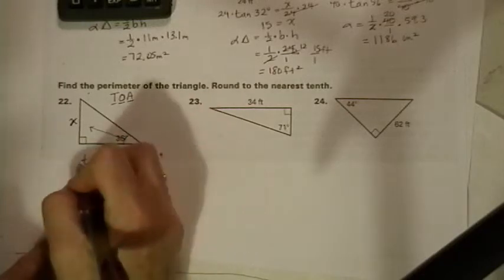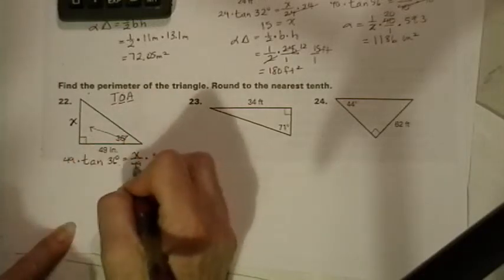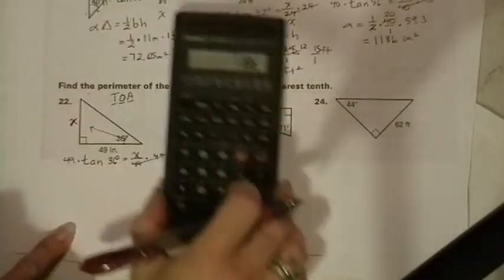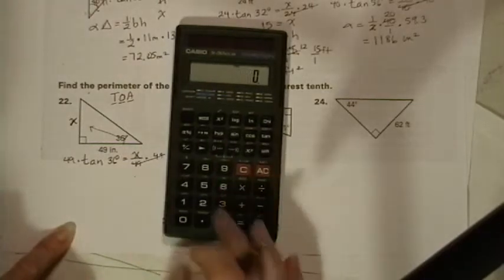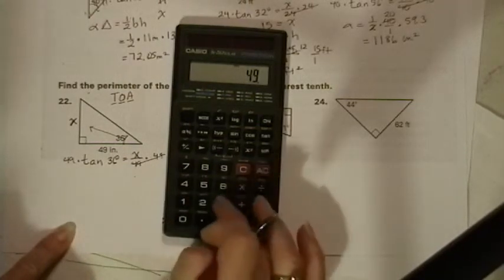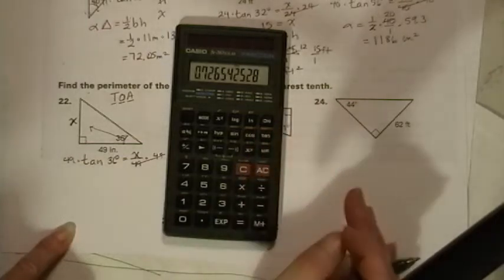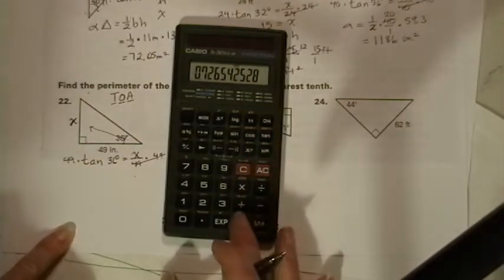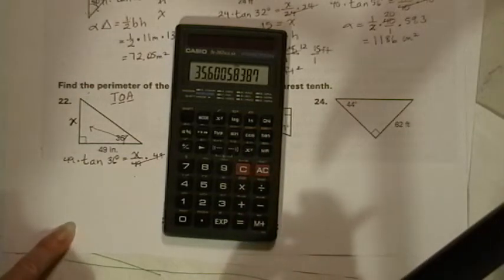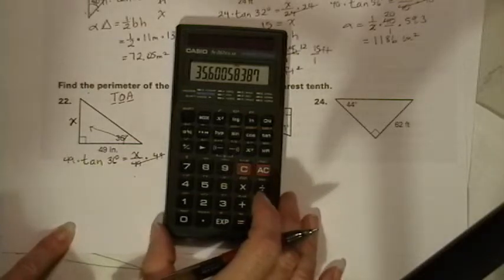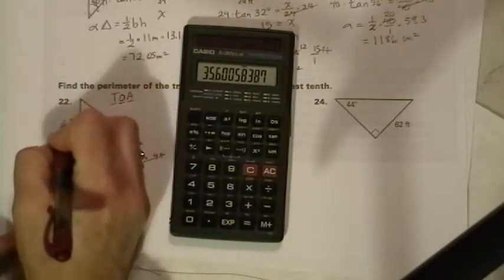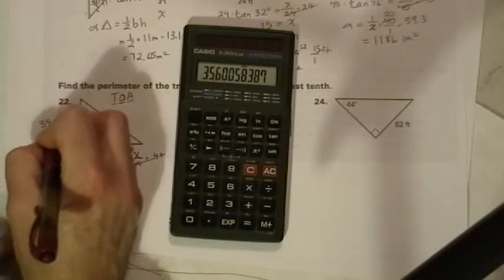I'm going to multiply both sides by 49 to get it out of the denominator. And using the Casio this time I'm going to press 49 times 36 tangent. That's the tangent ratio. And I'm going to multiply and I get 35.6. So this is 35.6.